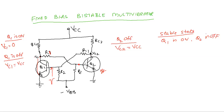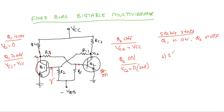Now Q2 is receiving VCC voltage, which makes Q2 transistor conduct and turn ON. Whenever Q2 transistor is ON, the collector and emitter terminals will be short-circuited, and the collector output voltage will equal the saturation voltage — almost zero. This is called another stable state, the second stable state, which is Q1 OFF and Q2 ON. It has two stable states. If you want to change again, you have to apply another trigger pulse. This is the concept of a bistable multivibrator.